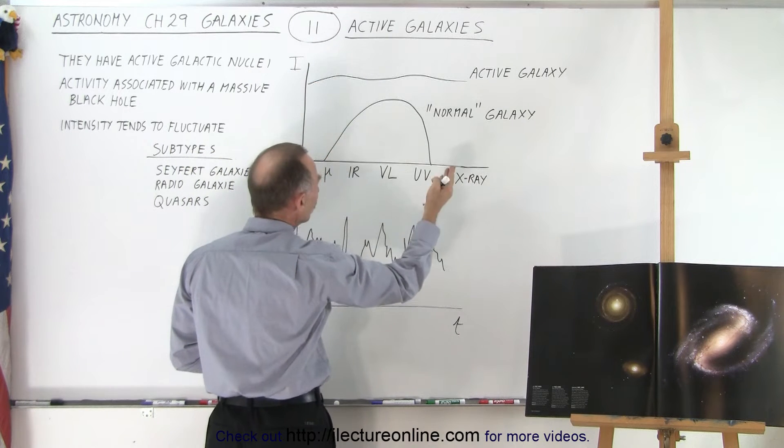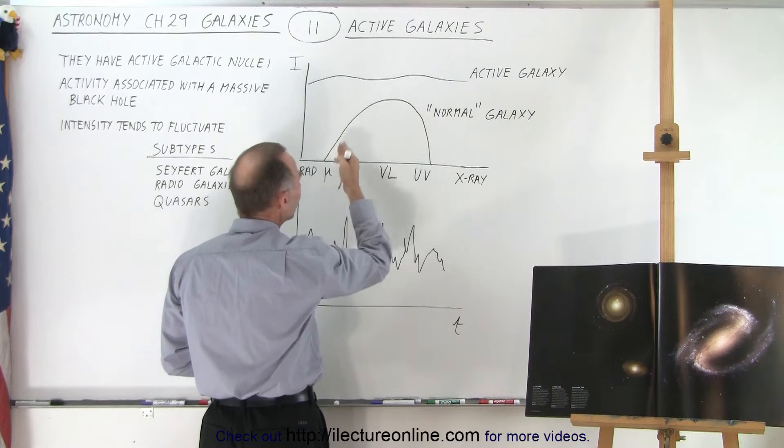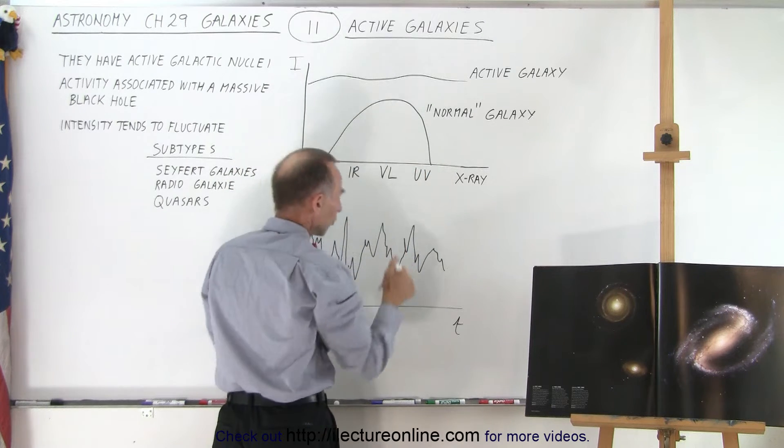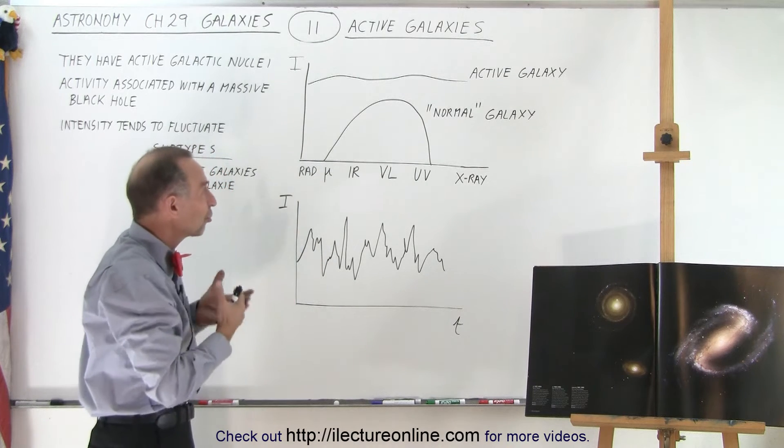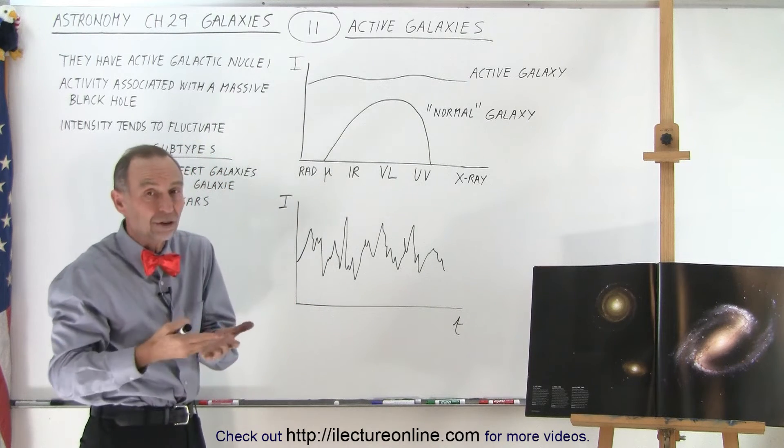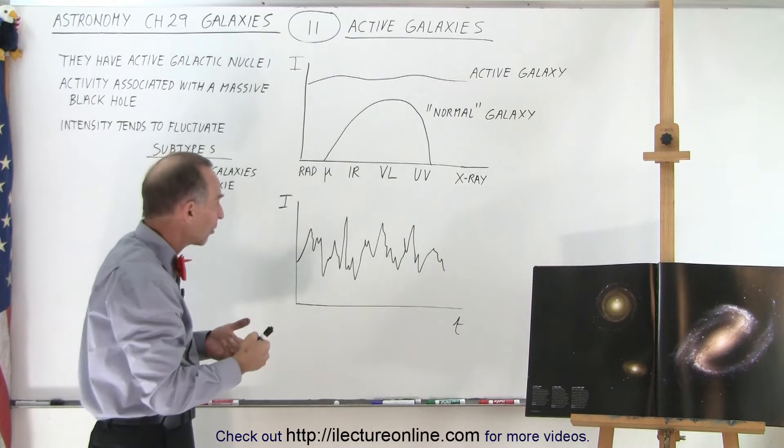Here's what we have: intensity occurs on the vertical axis at various wavelengths. For a normal galaxy, they range typically from infrared to UV because most of the light we get from normal galaxies is from stars.